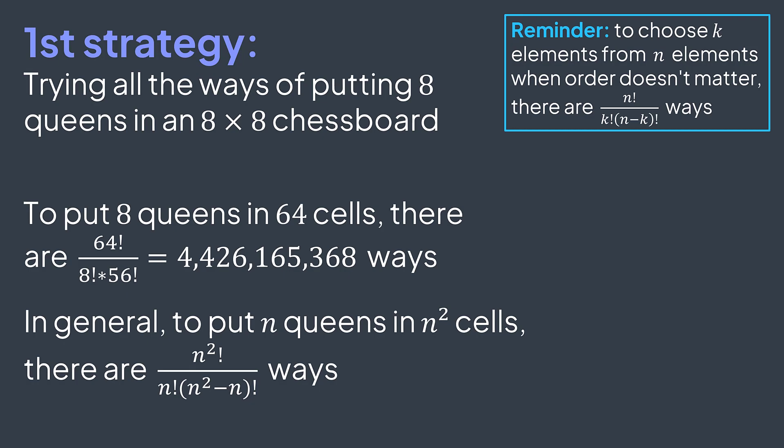To choose k elements from n elements when order doesn't matter, we have n factorial divided by k factorial times (n minus k) factorial possibilities. That's what we're doing here: choosing n empty cells to place our queens over the total number of empty cells n squared.